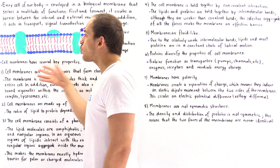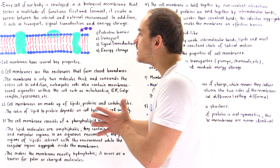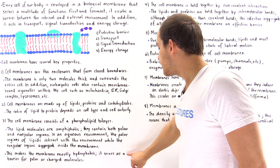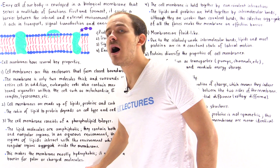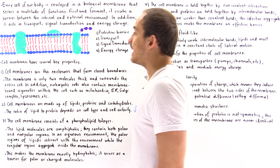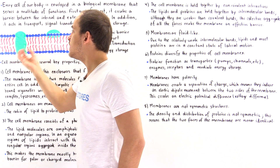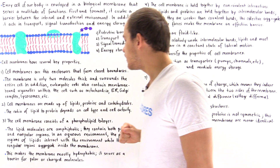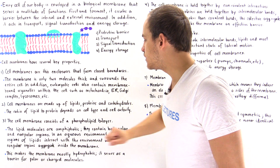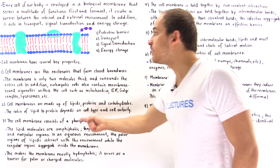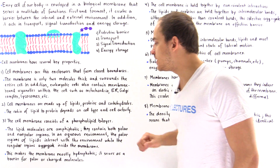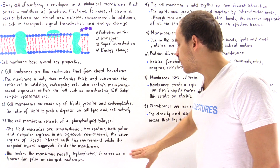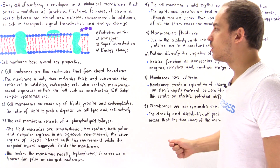The non-polar region of the membrane predominates, making the membrane predominantly non-polar. This means the cell membrane serves as a barrier for polar and charged molecules. If polar or charged molecules want to enter or exit the cell, they must use protein channels or pumps. In an aqueous environment, the polar regions of the lipids interact with the environment while the non-polar regions aggregate inside the membrane, making it mostly hydrophobic.